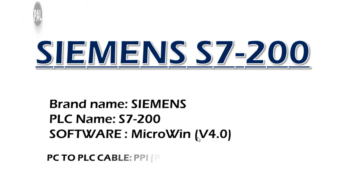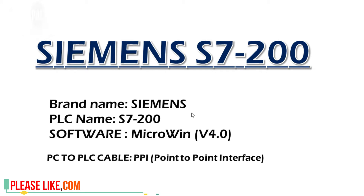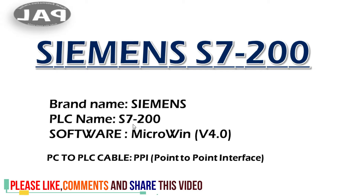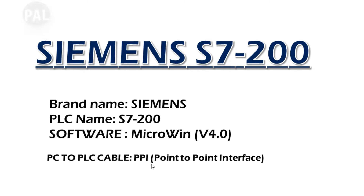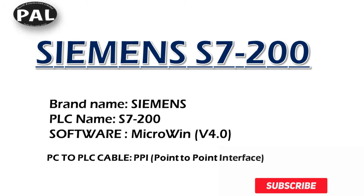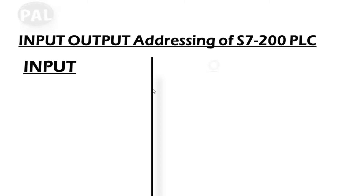Today's topic is the S7-200. You can see the brand name Siemens, PLC name S7-200, and the model CPU 224 XP is one of the available versions. PC to PLC communication uses PPI — Point-to-Point Interface. You can also use the MPI cable, which is a Multi-Point Interface. Let's go to the next topic.